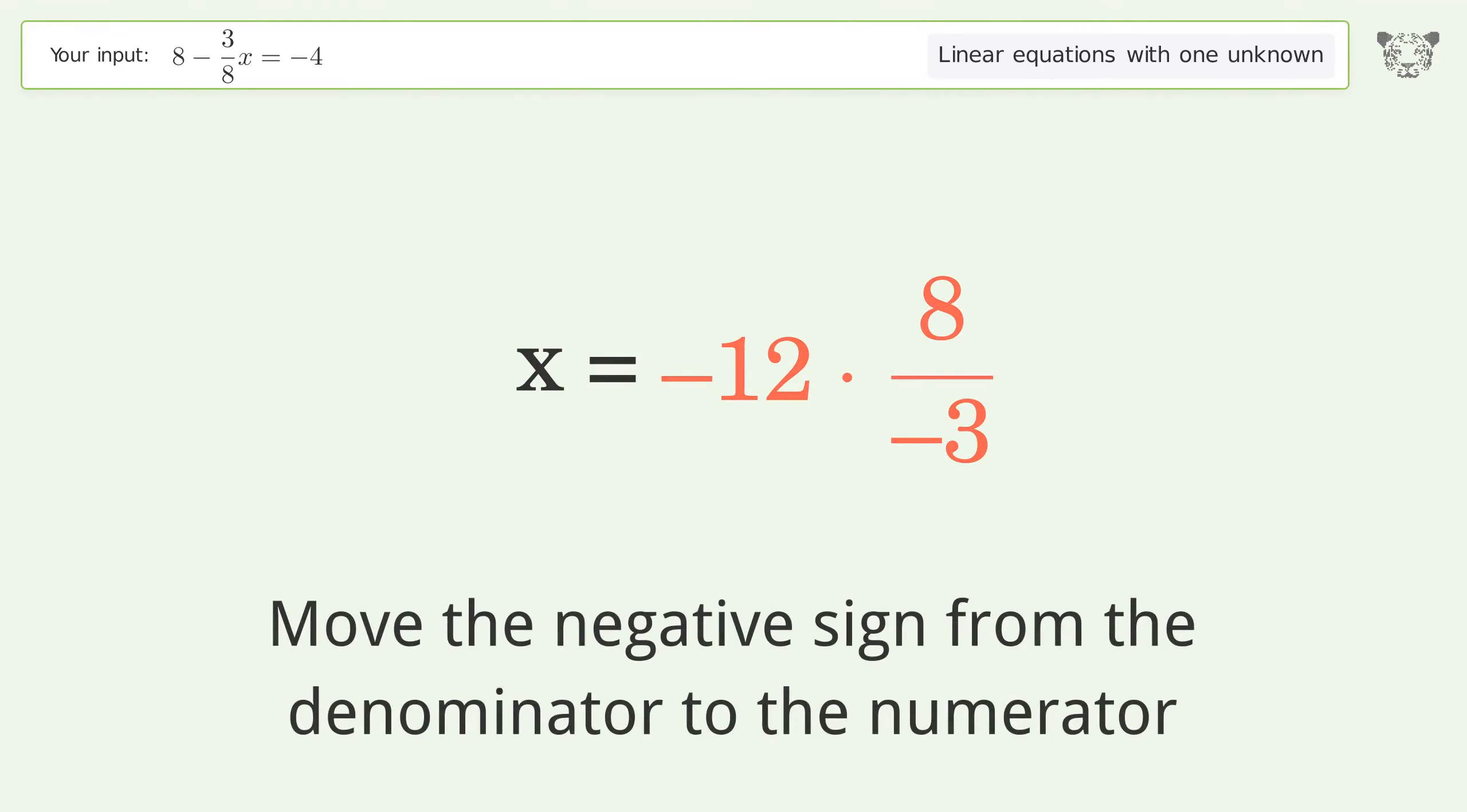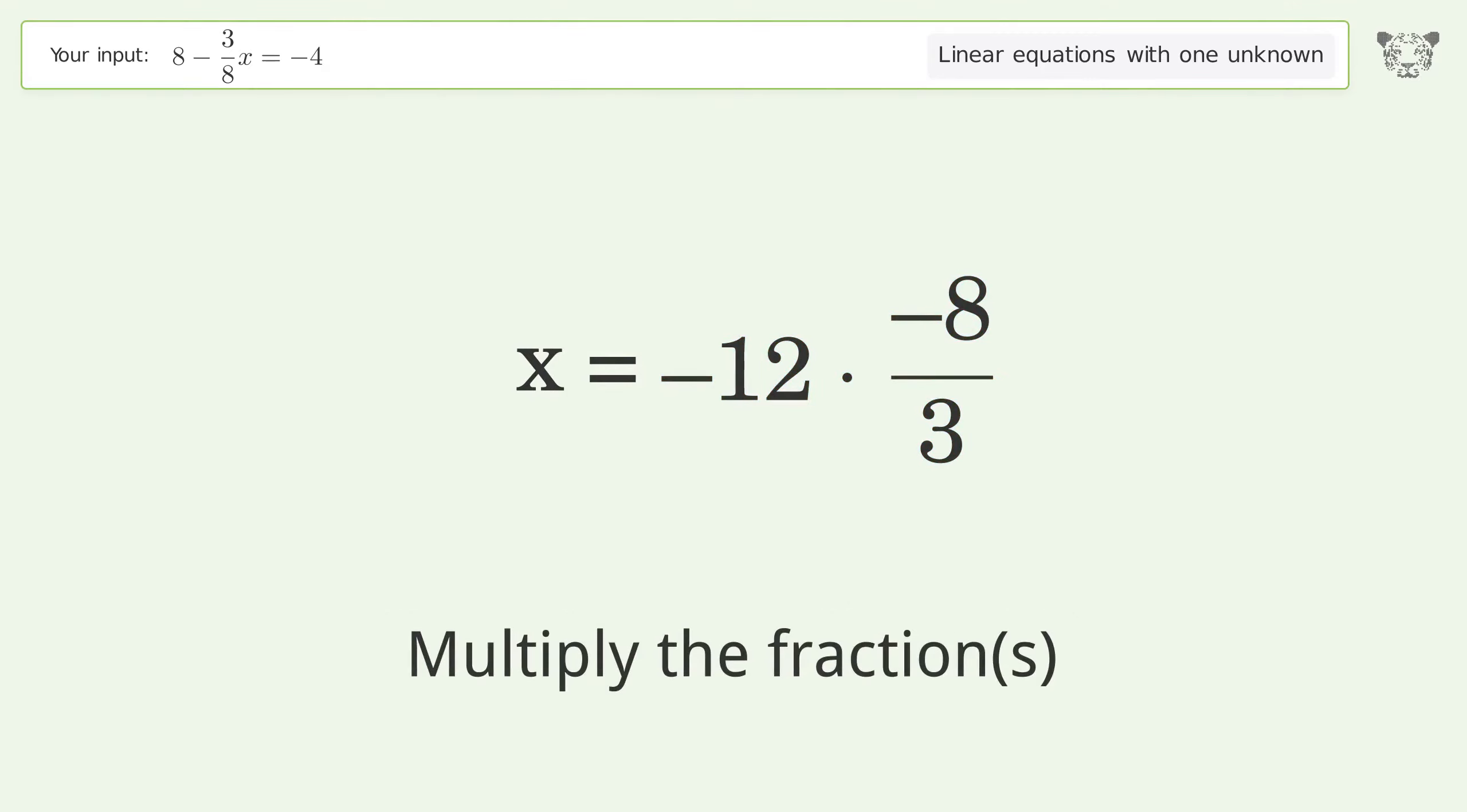Move the negative sign from the denominator to the numerator. Multiply the fractions. Simplify the arithmetic. And so the final result is x equals 32.